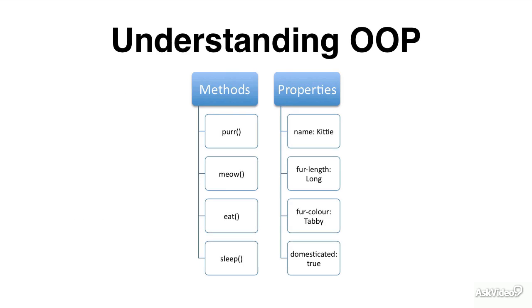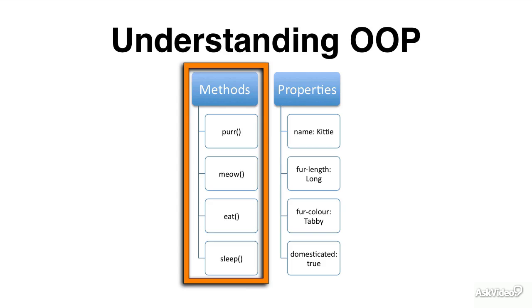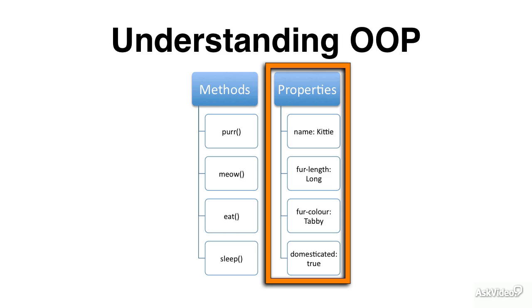So here's an example of methods and properties. A few methods of the cat object that we were talking about before: purr, meow, eat, sleep. And properties: name is kitty, fur length is long, fur color is tabby, domesticated is true.